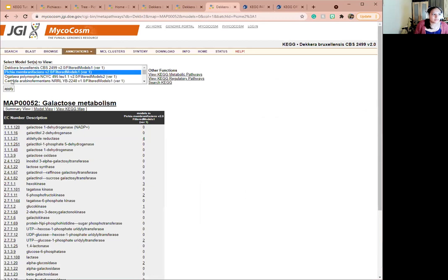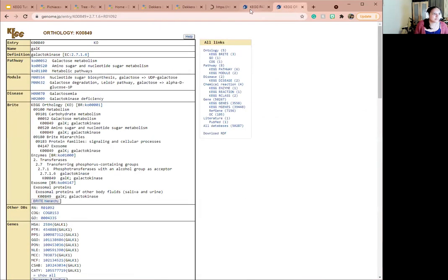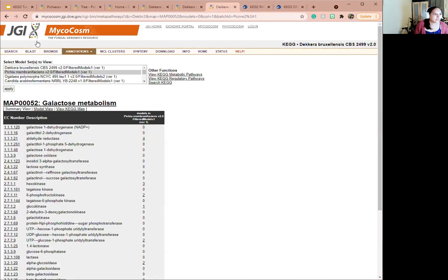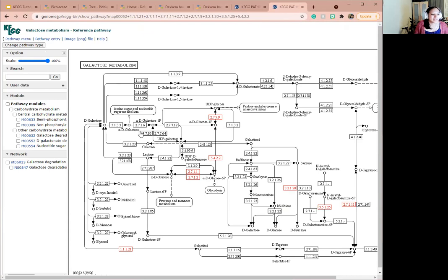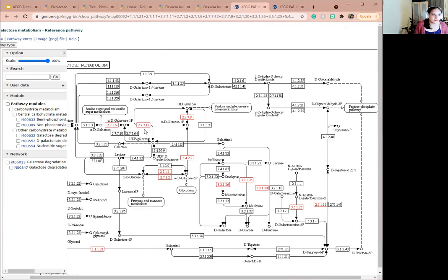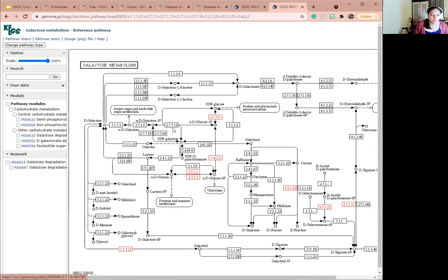But what about Pichia? We can click on Pichia and view the KEGG map for it as well. You see the KEGG map and we see that these boxes, which were red with Dekkera are black with Pichia, which tells us these two enzymes are not present in this galactose metabolism pathway. And this hints at a theory that these two enzymes are responsible for galactose metabolism. And without them, you cannot grow Pichia on galactose. But this can also be tested.